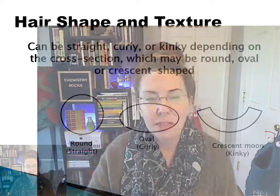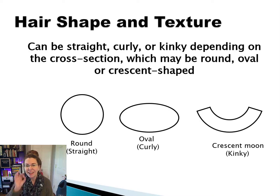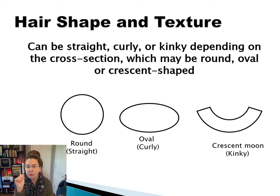Let's talk about hair texture — how we can determine what the texture of a hair is based on its cross-sectional area or its microscopic appearance. Hair shape and texture: hairs can be straight, they can be curly, or they can be kinky curly, which is a really tight coil, depending on the cross-sectional diameter.